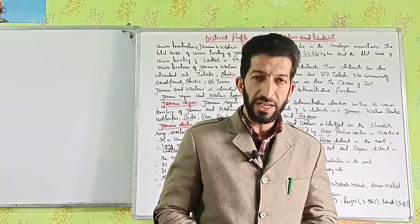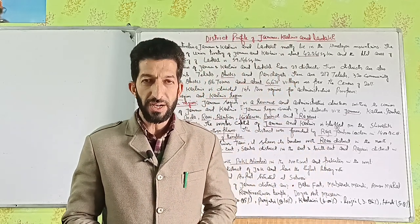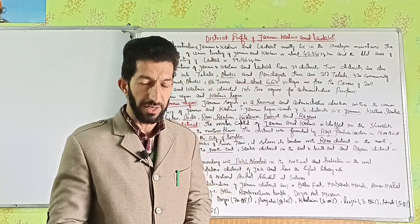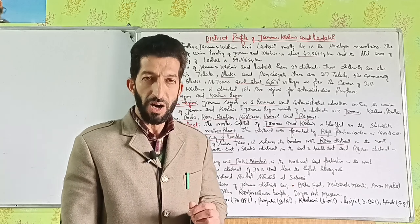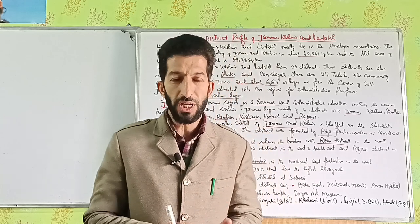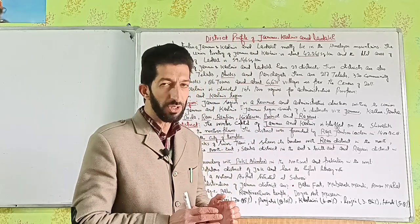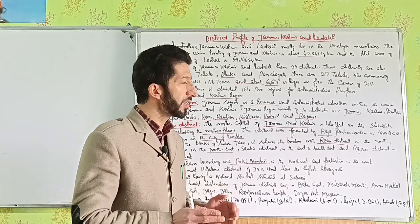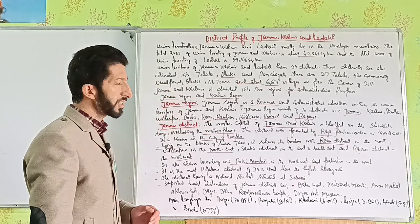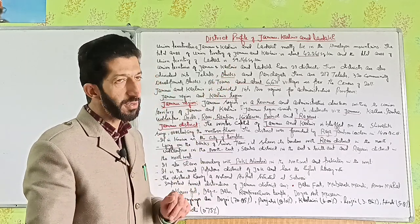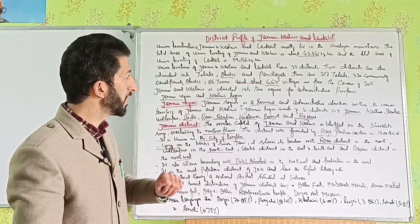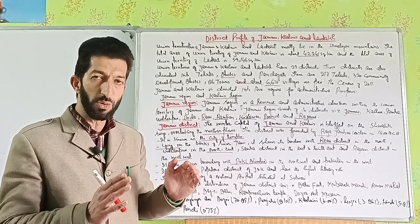It is the Union Territories of Jammu, Kashmir and Ladakh, situated in the Northern Himalayan Mountains. The Union Territory of Jammu and Kashmir has an area of 42,241 square kilometer. The Union Territory of Ladakh has an area of 59,146 square kilometer. Together they comprise 22 districts.